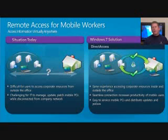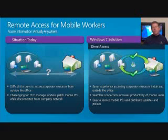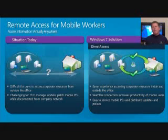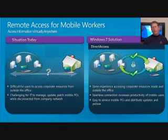Honestly, I worry about it later. But with Direct Access, I get seamless connectivity whenever my machine is connected to the Internet. Any time my machine is on with Direct Access and connected to the Internet, the IT department has full access to my machine. When I turn it on, an IPsec tunnel is created between my machine and the corporate network, so IT can look at my machine and remediate it if it's not up to date.